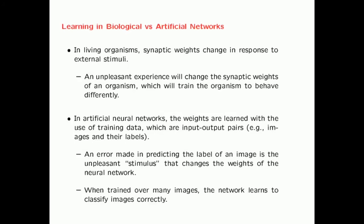In living organisms, synaptic weights change in response to external stimuli. For example, if an organism has an unpleasant experience, that will change the synaptic weights in the neurons of that organism, training the organism to behave differently. In artificial neural networks, the weights are learned with the use of training data, which are viewed as input-output pairs. For example, if you have an image with a label such as a banana, and your neural network classifies it differently, the weights will change in response to the error made in predicting the label. When trained over many images, the network learns how to classify images correctly.